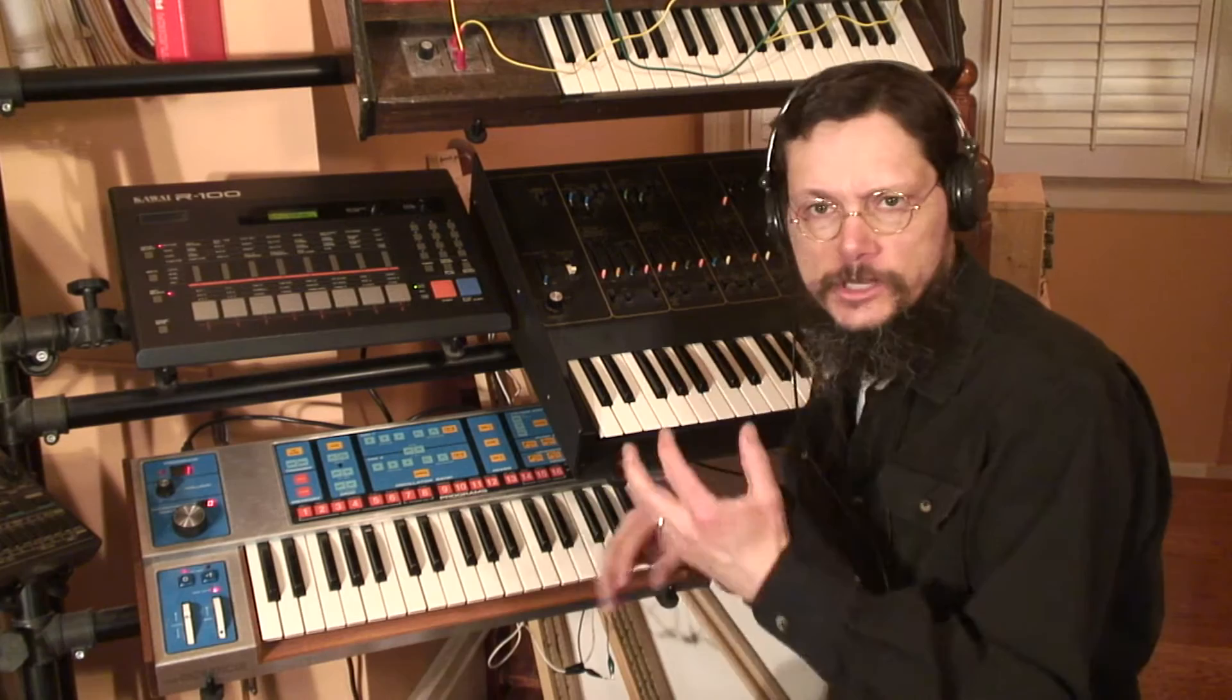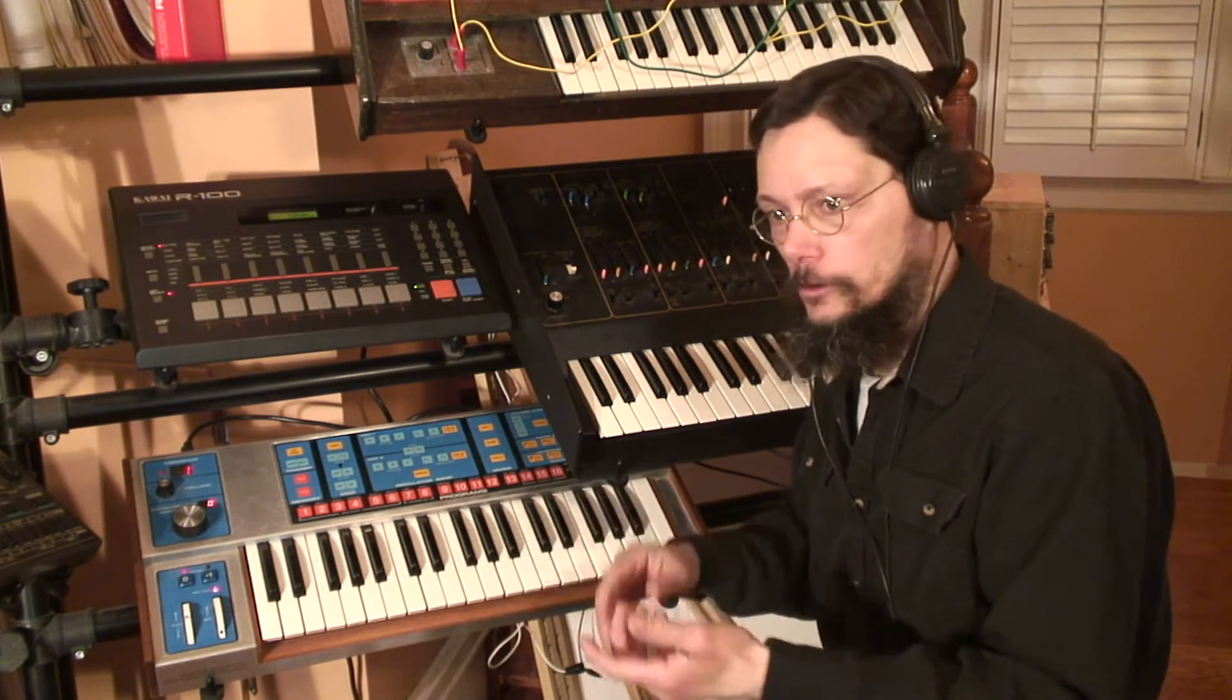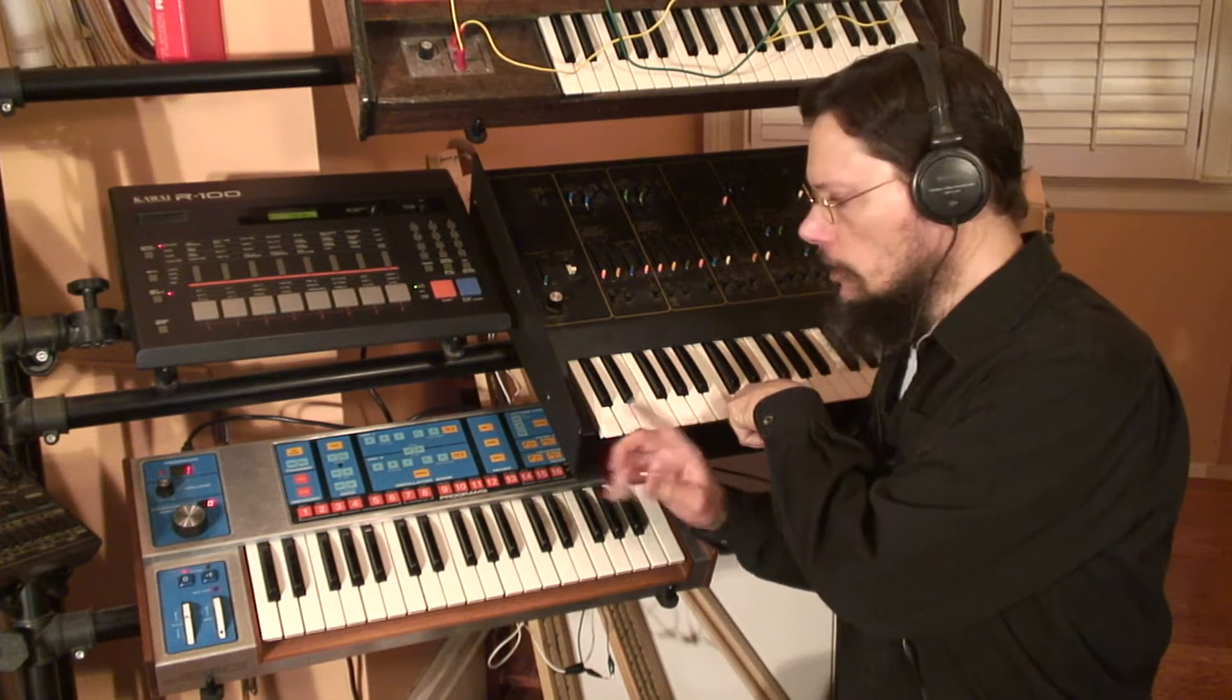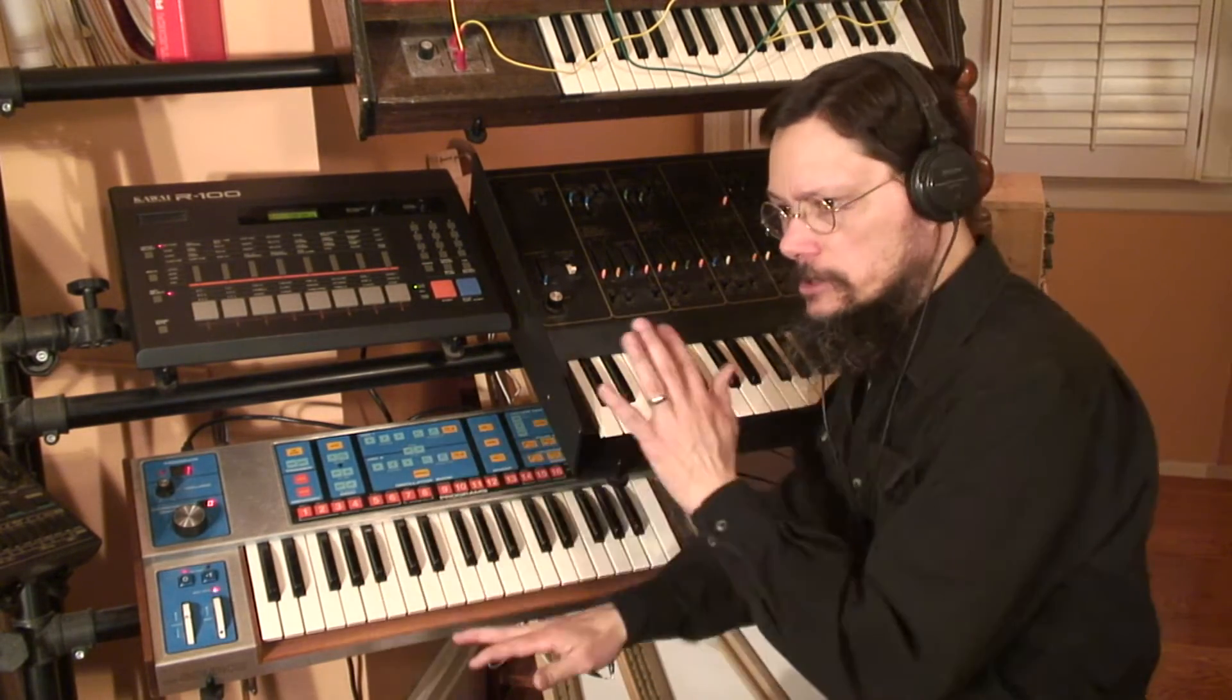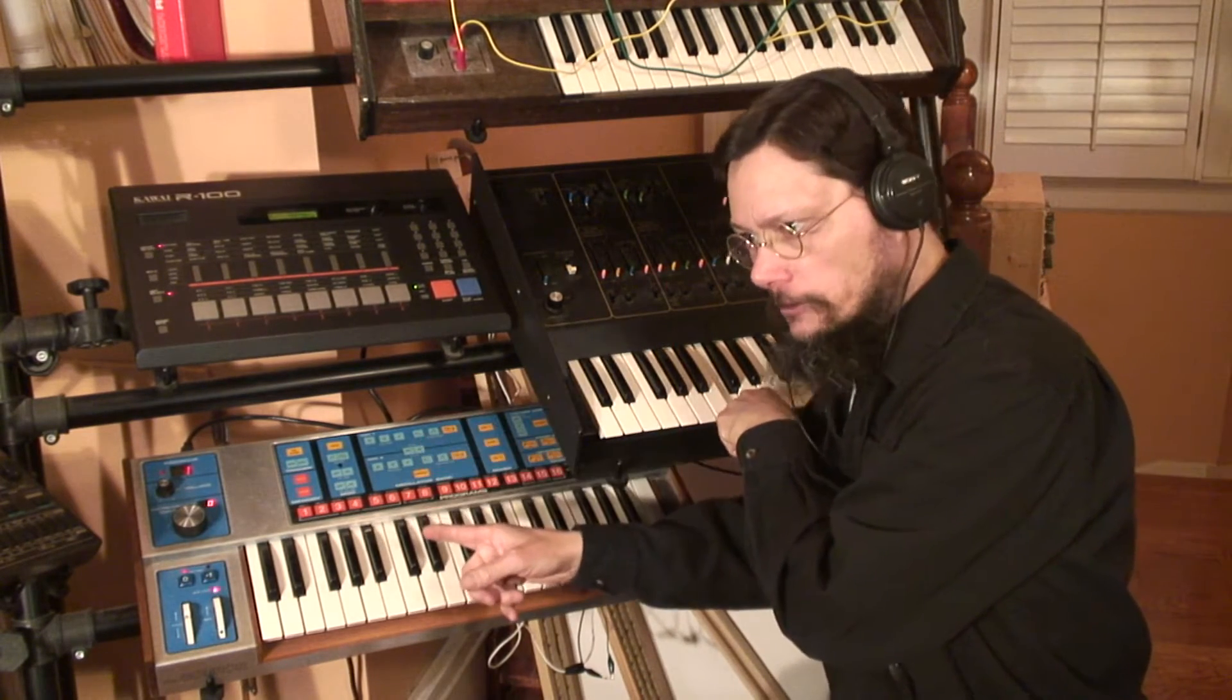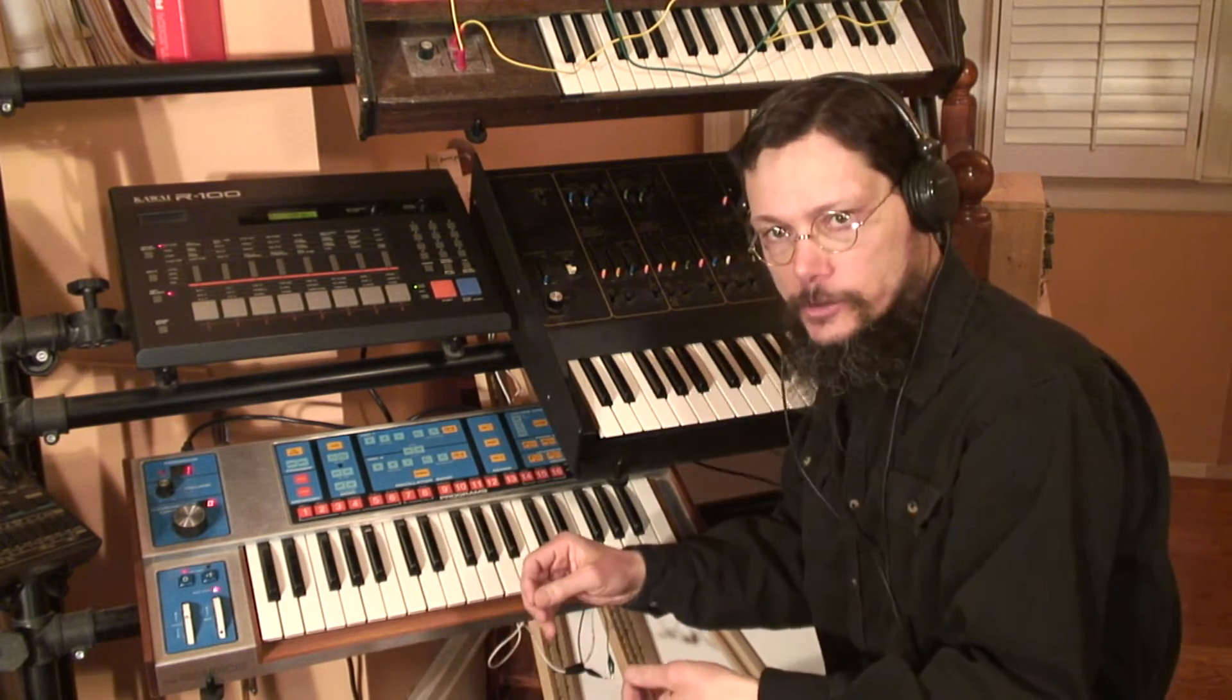So the two synths are now connected together via the CV and gate interface. And as you can probably tell, the Moog source is in some sort of drone mode. But interestingly enough, if I push a key down on the Arp, the Moog goes silent. And then when I lift up on the Arp, you can hear the Moog again. So it seems to be in some sort of inverse relationship, where if the Arp is on, the Moog is off, and vice versa. So obviously there's something wrong with the gate signals going between them. Let me hit the whiteboard and I'll show you what's going on.